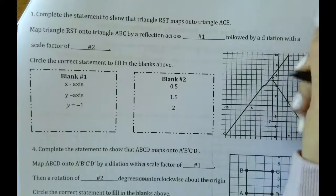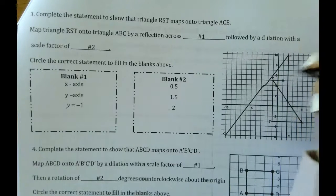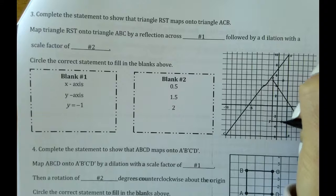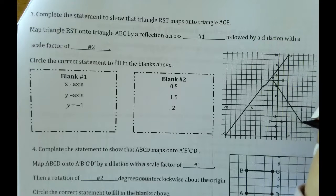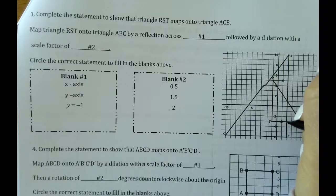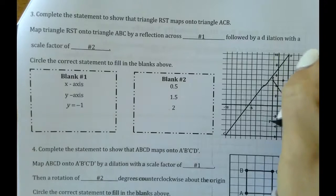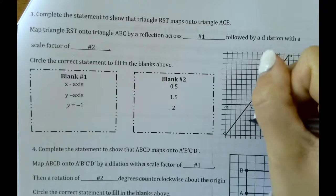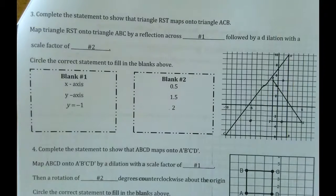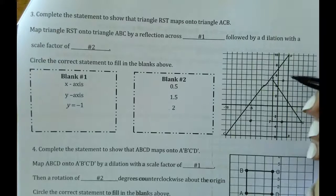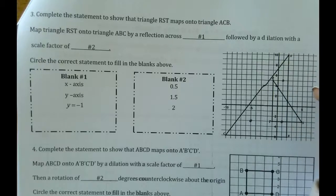So R, if we flipped it over y, it would be over here. Right, T would be over here. S would be 1, 2, 3, 4, 5 away. 1, 2, 3, 4, 5. So there would be S. Then if we dilated this, obviously we made it bigger.